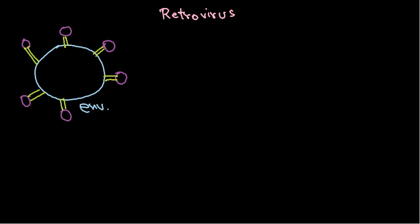Inside this envelope there is a capsid. Inside the capsid there is the RNA as the genetic material — two single-stranded RNAs are present. Along with the two RNA strands there are also some protein components carried by retroviruses, and those are three important proteins.